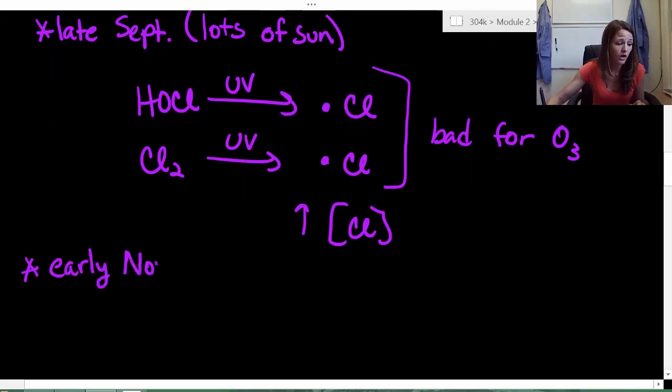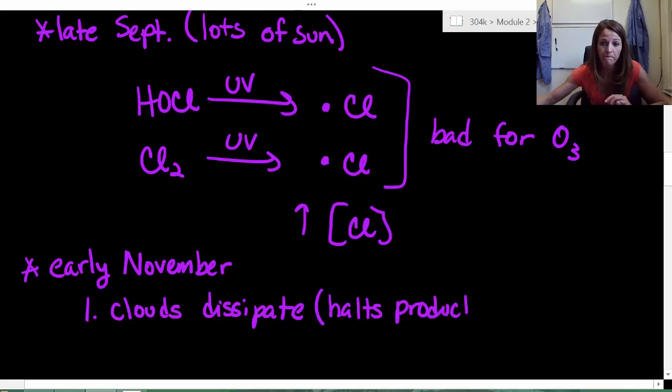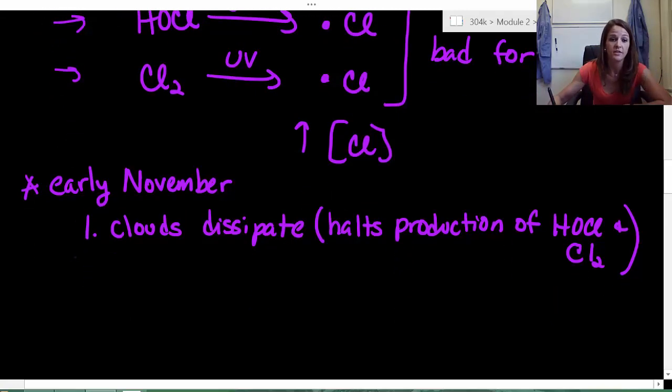Now let's move forward. Now we move to early November. So in early November, two important things happen. The first thing is that our clouds start to dissipate. So it's not that cold. We don't have these huge vortex of cold air. So our clouds start to dissipate. So what you need to be thinking of, this halts the production of HOCl and chlorine gas. So we're no longer producing these things that then decompose to create the chlorine radical.